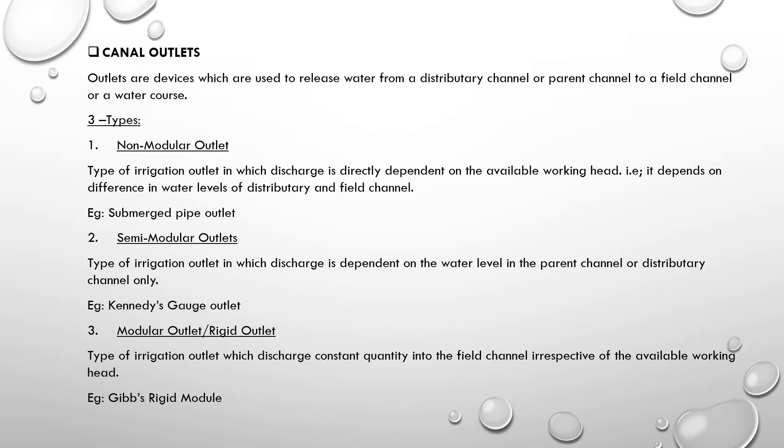Canal outlets. Canal outlets are devices which are used to release water from a distributory channel or parent channel to a field channel or watercourse. The main channel branches into a distributory, then to a field channel. It is used for irrigation purposes.